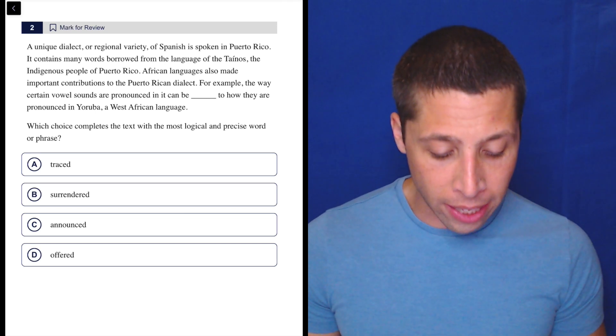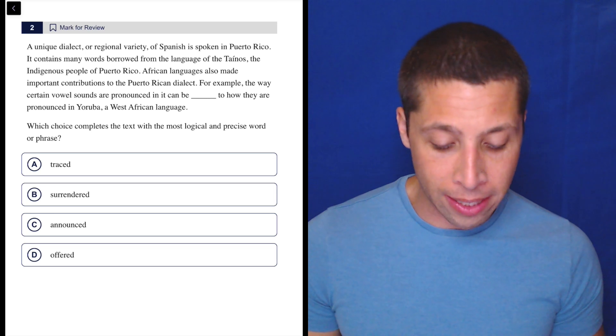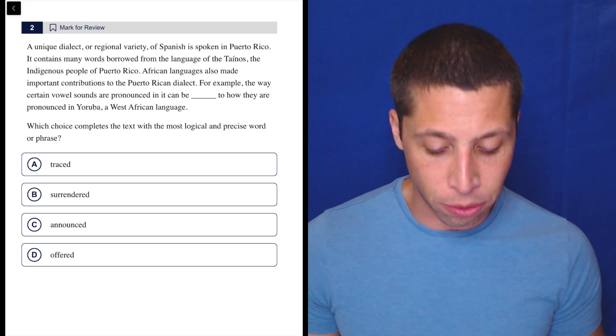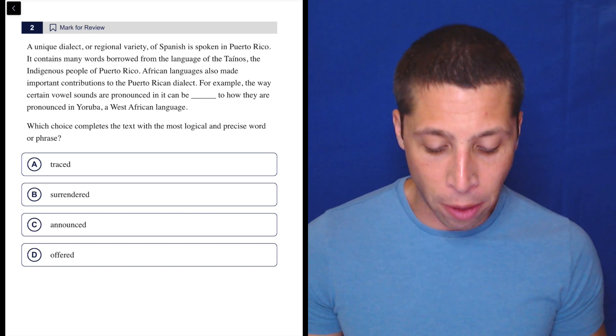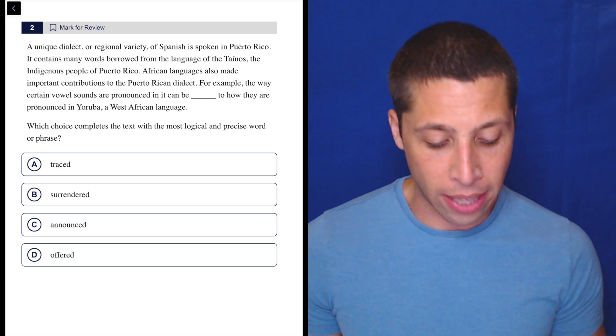A unique dialect or regional variety of Spanish is spoken in Puerto Rico. It contains many words borrowed from the language of the Tainos, the indigenous people of Puerto Rico. African languages also made important contributions to the Puerto Rican dialect. For example, the way certain vowel sounds are pronounced in it can be blank to how they are pronounced in Yoruba, a West African language.